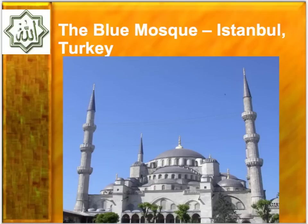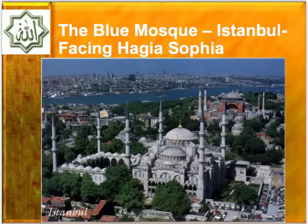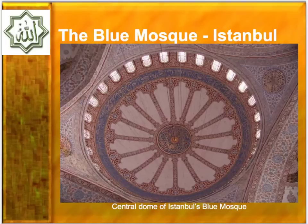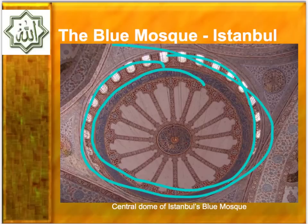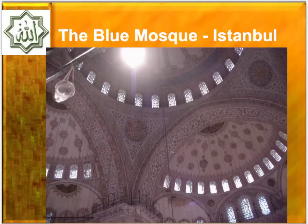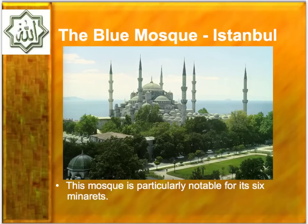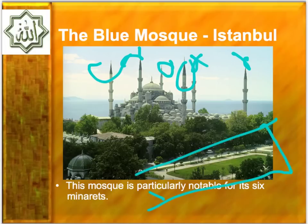Some famous buildings you need to know — you need to know the city, the country, and the name of the building. This is the Blue Mosque, which is in Istanbul, Turkey. You can see the Blue Mosque here and the Hagia Sophia over there, and this is where the Hippodrome used to be. It's called the Blue Mosque because of its blue tile on the inside — you can see the Arabic writing. You can count the six minarets. The Hippodrome is visible down below.